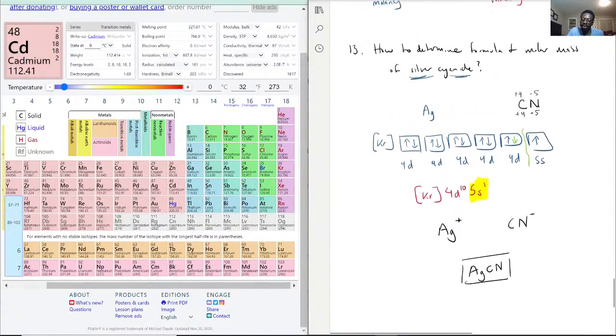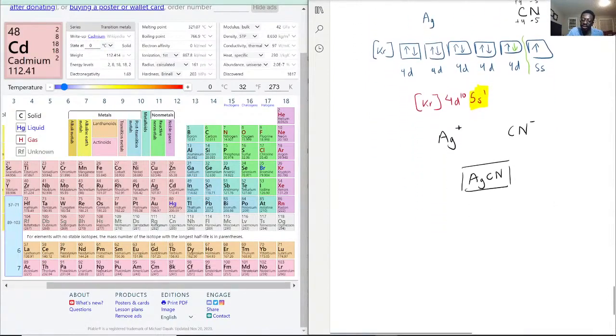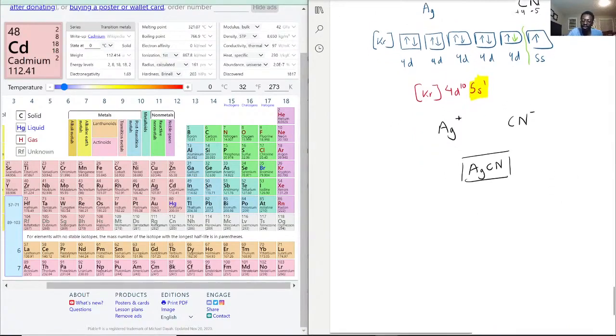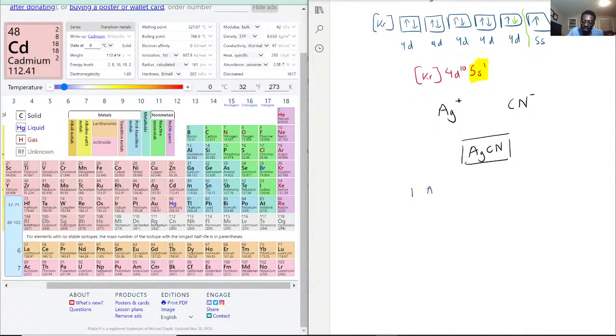Now the question asks for the molecular masses or molar mass of cyanide as well. So for this we actually have our work cut out for us because only one of each element: one Ag, one carbon, and one nitrogen.